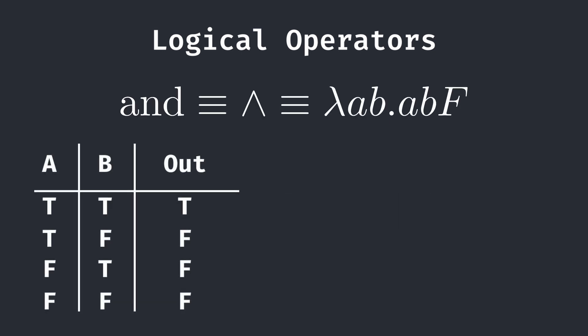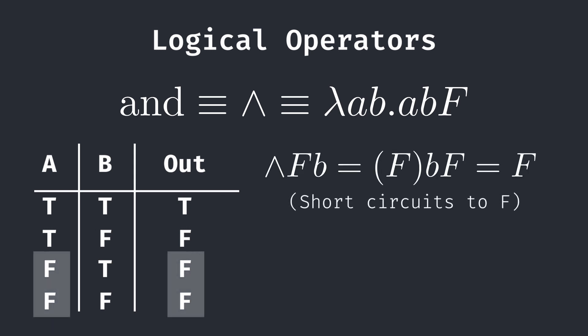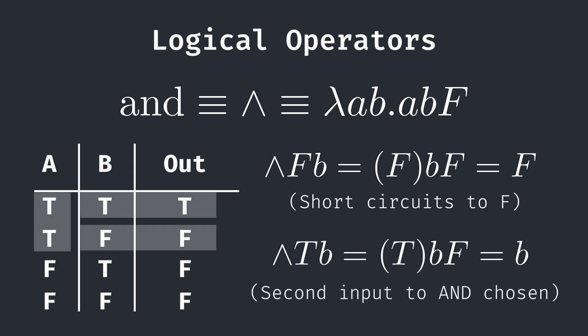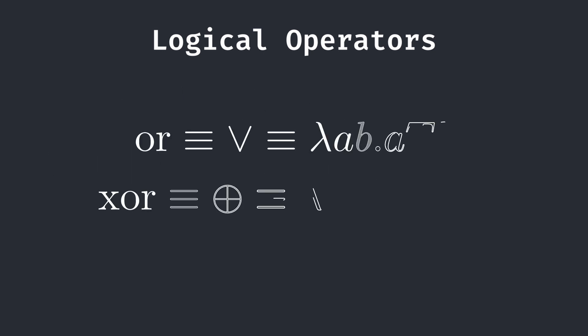Similarly, we can define the AND operator. It has two parameters and applies the first input onto the second input and false respectively. If the first input is false, the statement will short circuit and simply choose the second option, false. If the first argument is true, the output of AND depends on the second input, which is chosen by our true function. Similarly, you can define the OR and XOR operators.